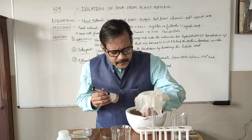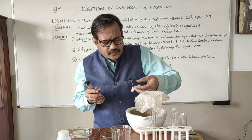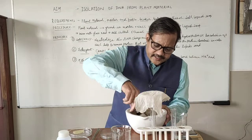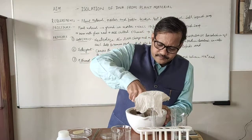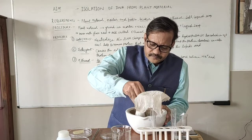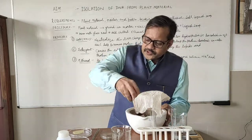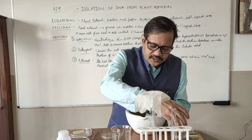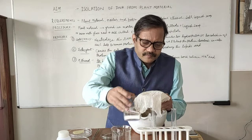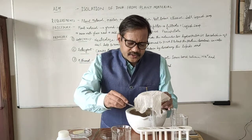This is a plant material — we have taken onion. We need to grind this onion. We need to grind it. Now we get the paste, add some water. Then we add some salt — NaCl here.